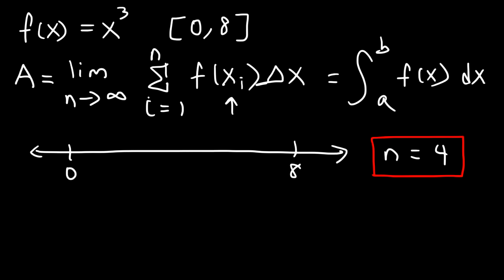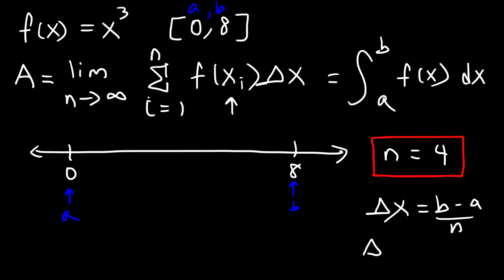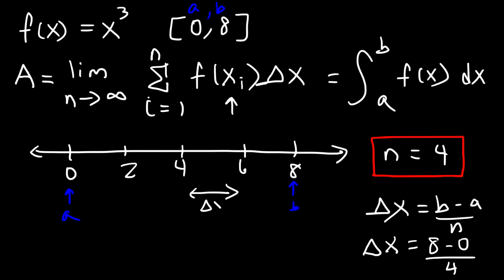So if n is 4, what is delta x? Delta x is b minus a divided by n. Keep in mind a is the beginning of the interval and b is the end. Now b is equal to 8, a is 0, and n is 4 for this example. So 8 divided by 4 is 2. The width of each sub-interval is equal to 2, and so that's the value of delta x.